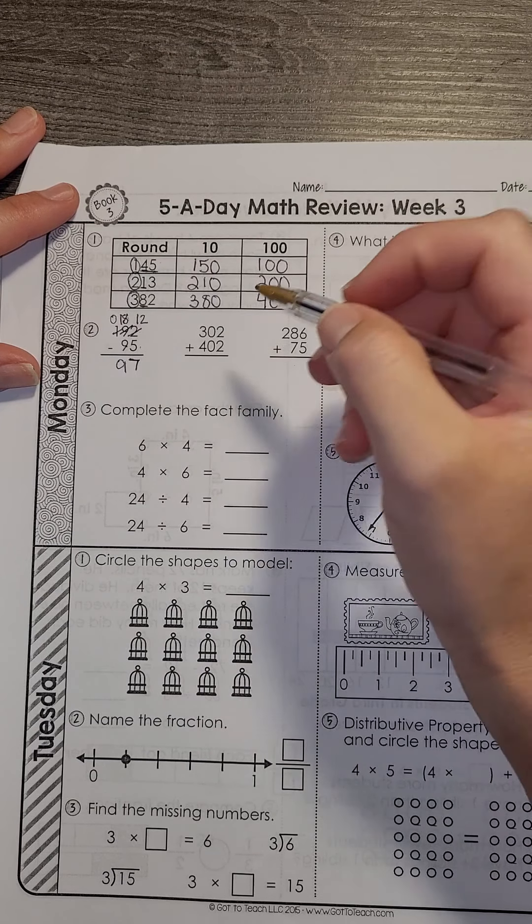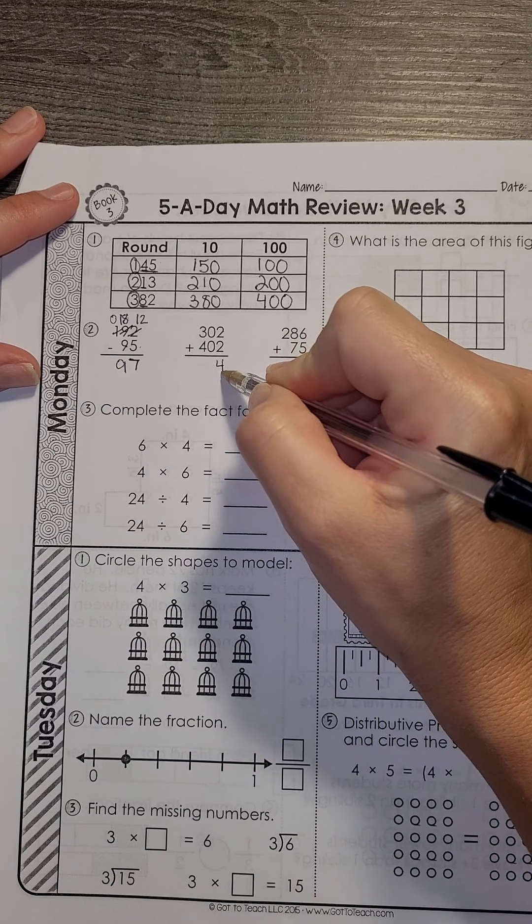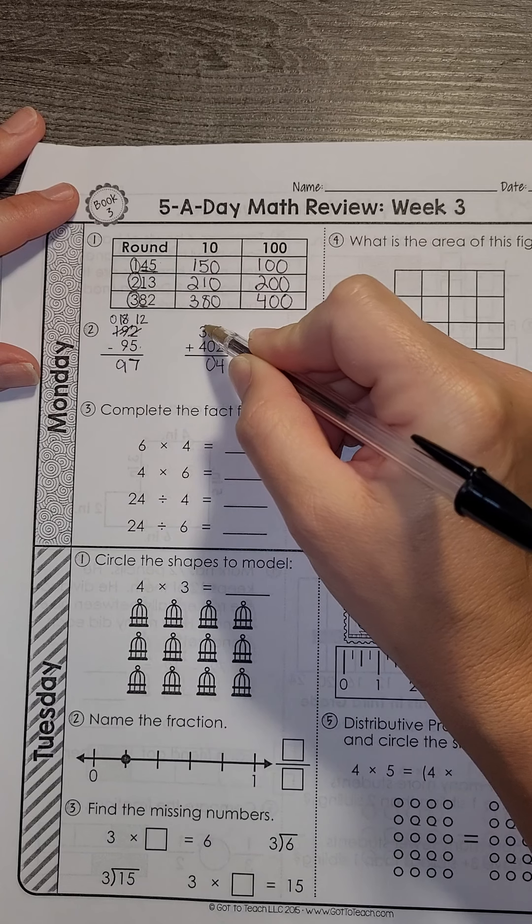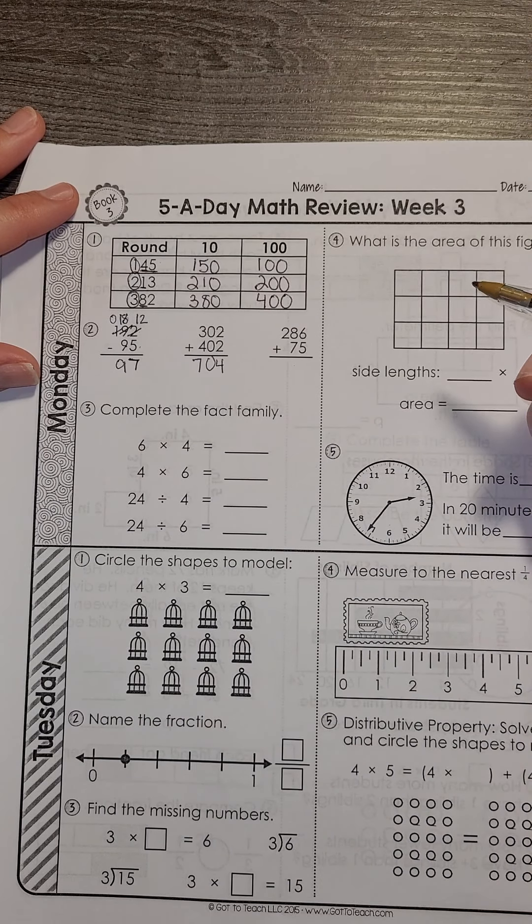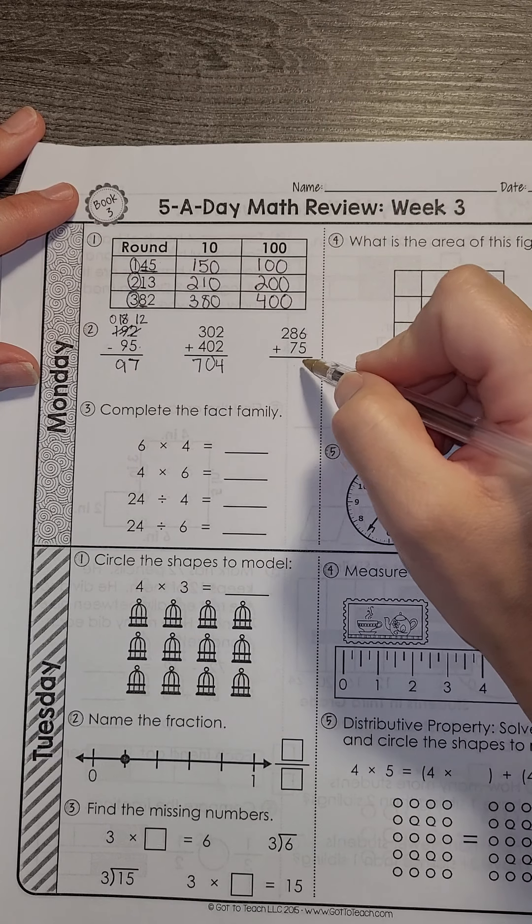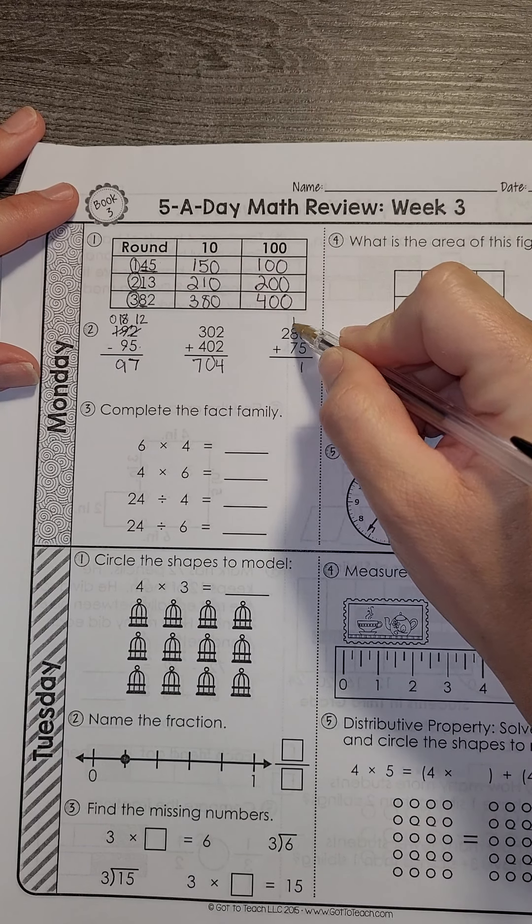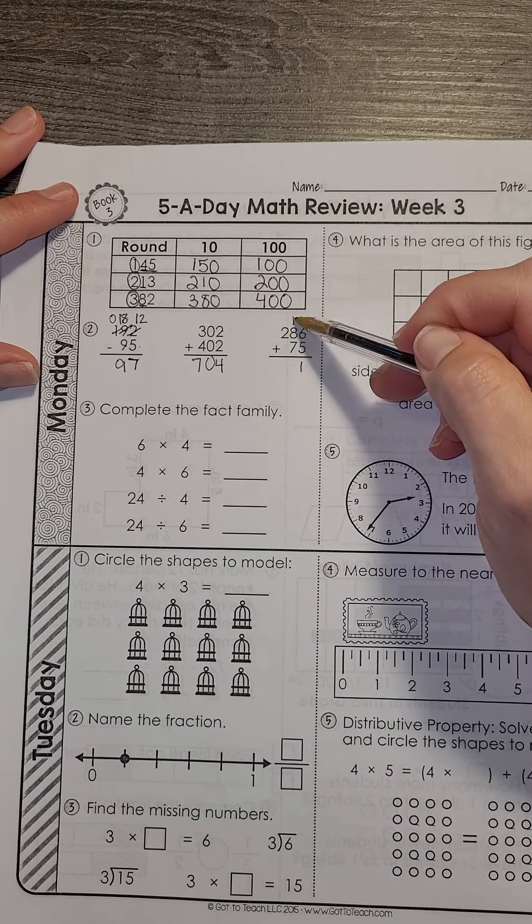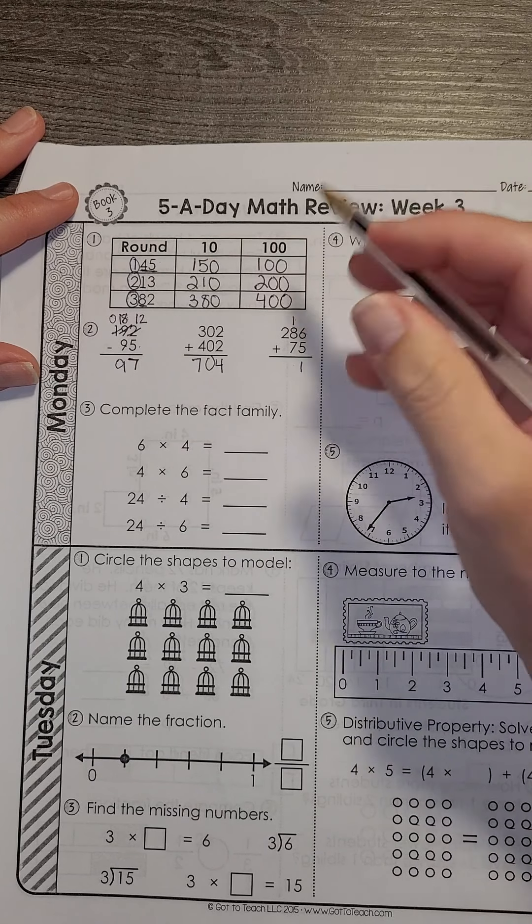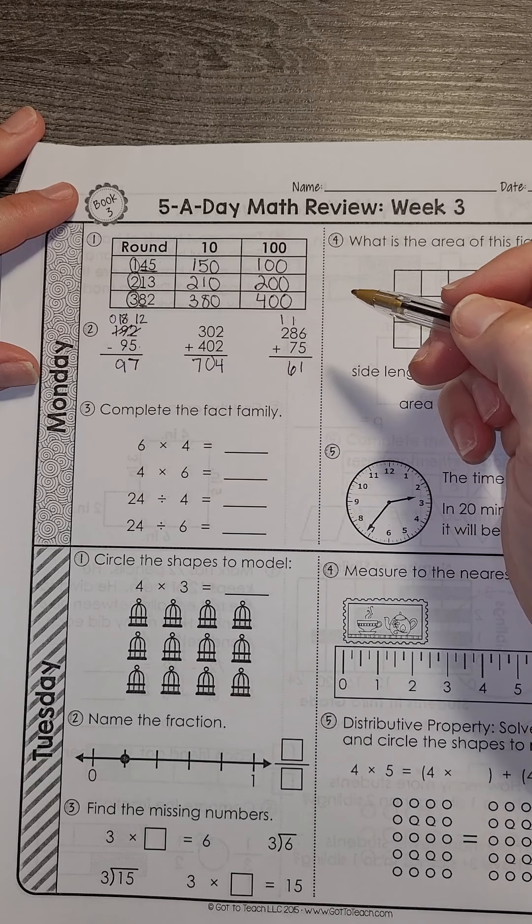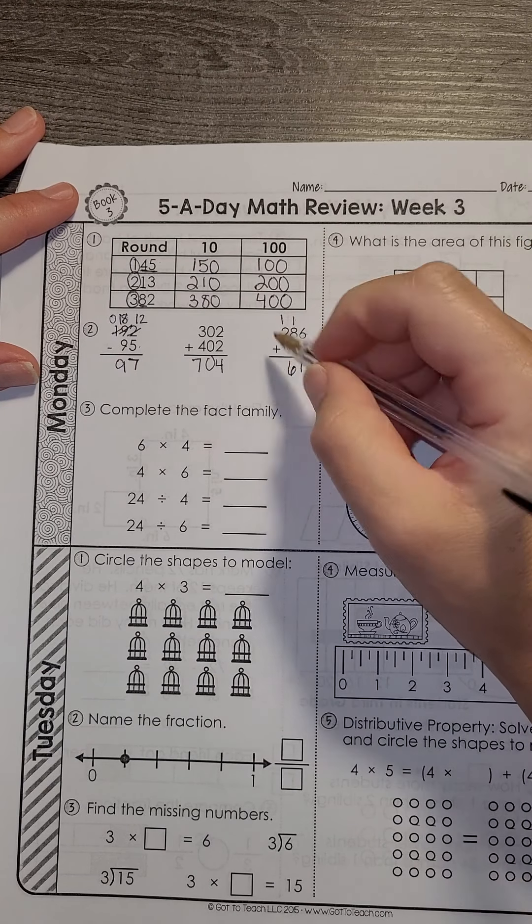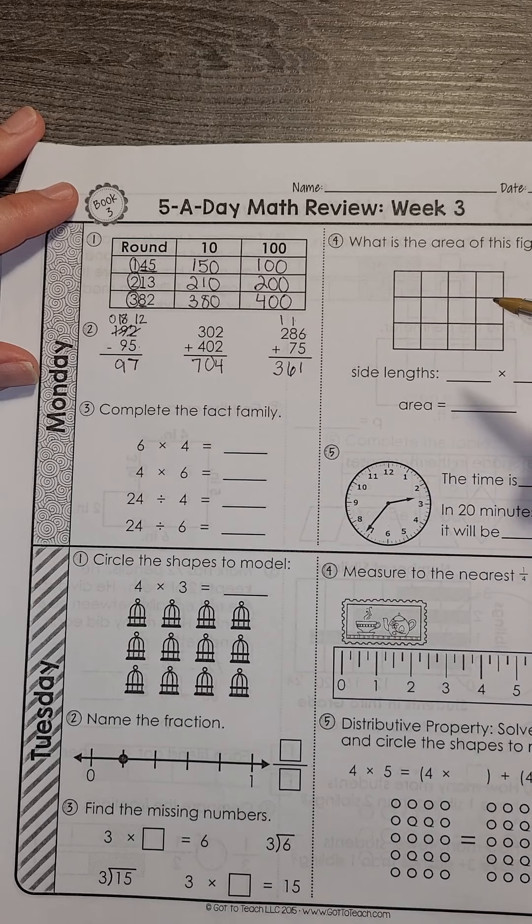The next one is addition, so 2 plus 2 is 4. No tens. 300 plus 400 is 700. 6 plus 5 is 11. I put my 1, carry my tens. Now I have 10 plus 80 plus 70, which is 160. I put my 6 tens, carry my hundreds. 100 plus 200 plus 100 is 300.